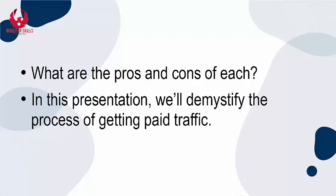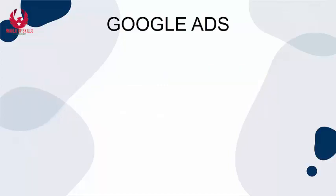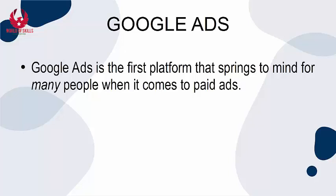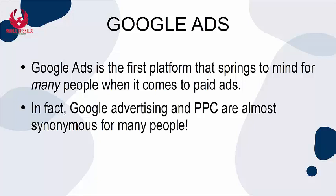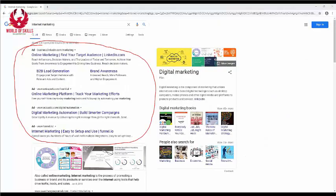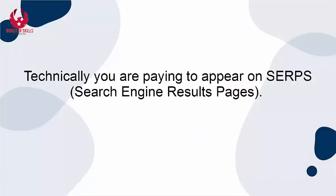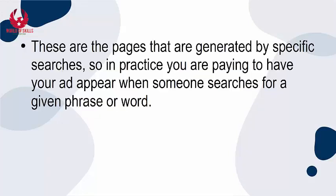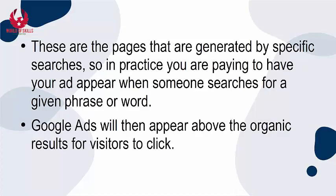In this presentation, we're going to demystify the process of getting paid traffic. Google Ads are the first platform that comes to mind for many people when it comes to paid advertising — in fact, Google advertising and PPC are nearly synonymous for many people. Google Ads are ads that appear on Google search results. Technically, you are paying to appear on search engine results pages, generated by specific searches. You are paying to have your ad seen when someone searches for a given keyword or phrase, appearing above the organic results for visitors to click on.